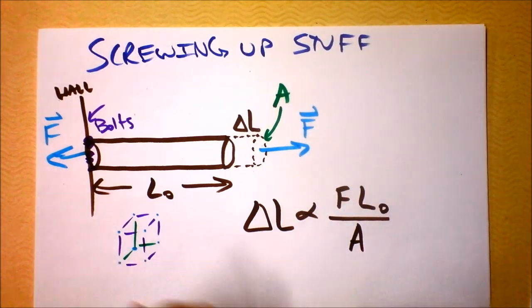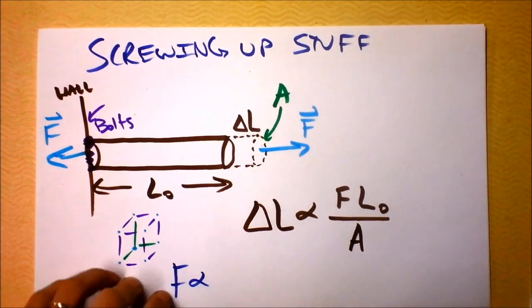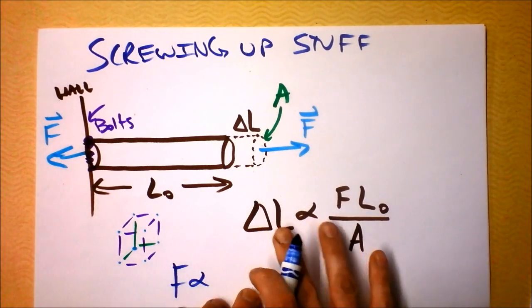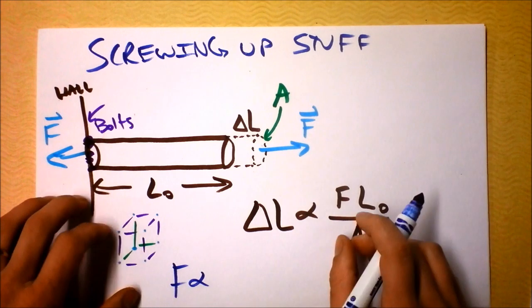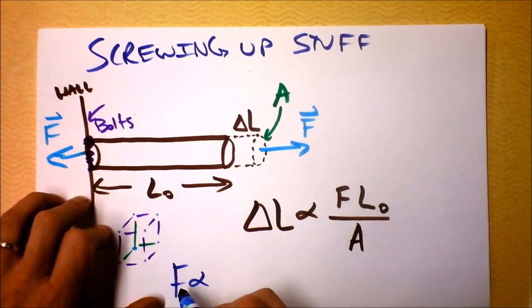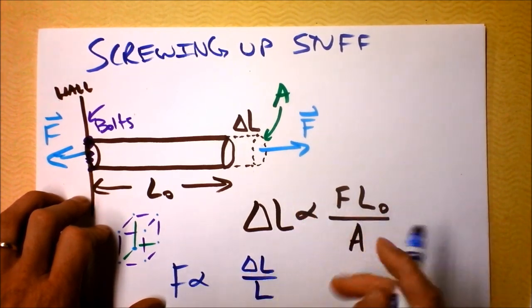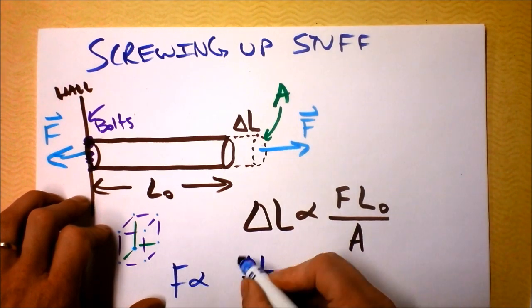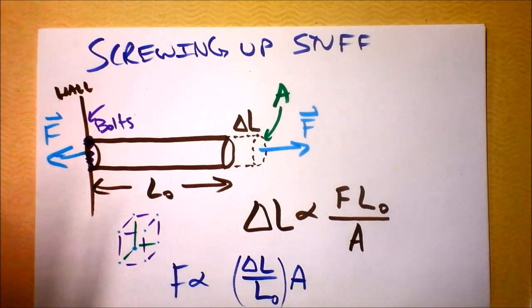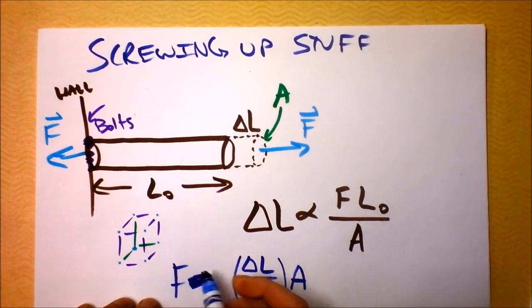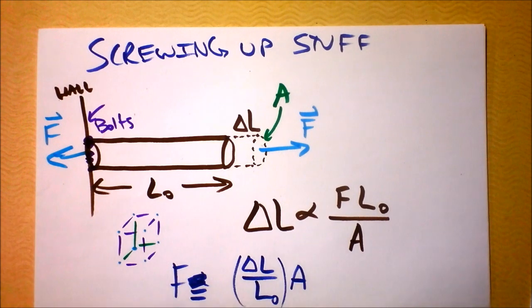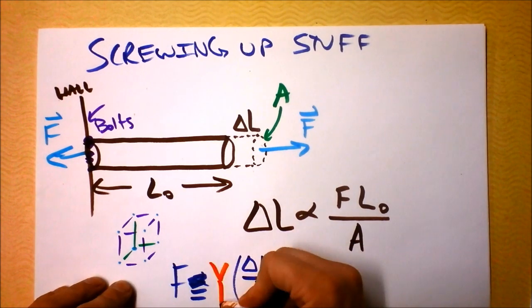Now we've got ourselves an equation. I'm going to reformat it a little bit. I'm going to say that force is proportional to delta L over L naught. I'm going to divide by L naught on both sides, put that in parentheses, and then I've got an A up in the numerator. Instead of writing a proportionality, I'm going to say that force is equal to a new variable, which I'll call Young's modulus.